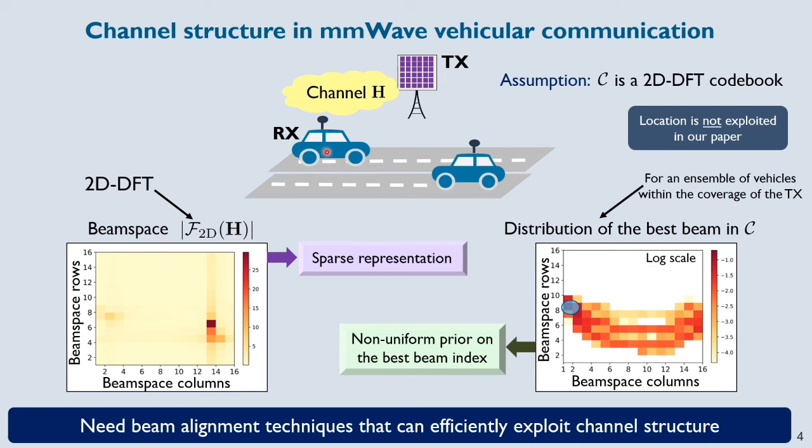Consider for example, a vehicular receiver moving on lane 1 of this road. It can be shown that the best beam index corresponding to this receiver traces out a path shown by this blue ball. When we consider an ensemble of receivers moving along both the lanes of the road, we end up with the best beam distribution that's shown over here. This distribution has a non-uniform structure which can result in a reduced training overhead when exploited properly.